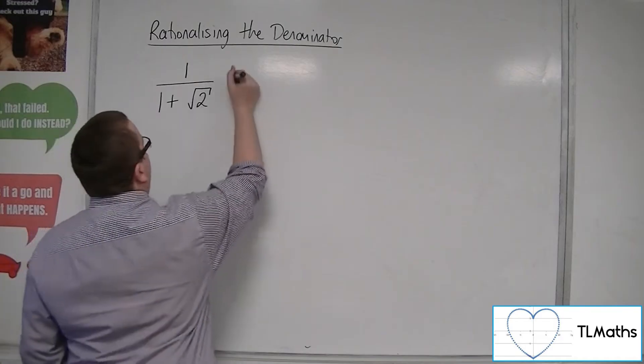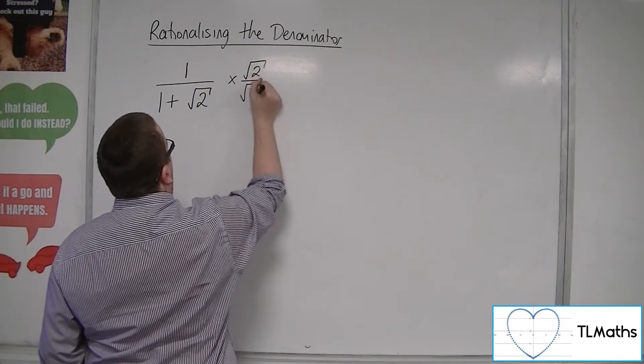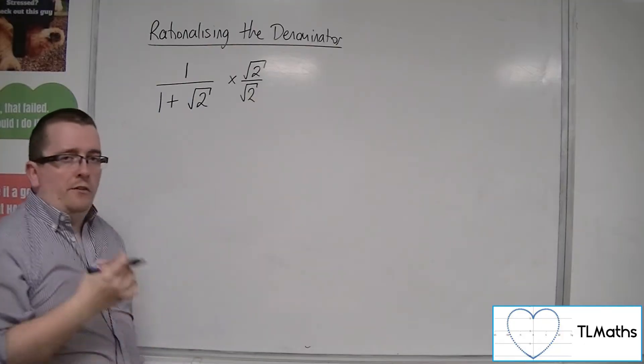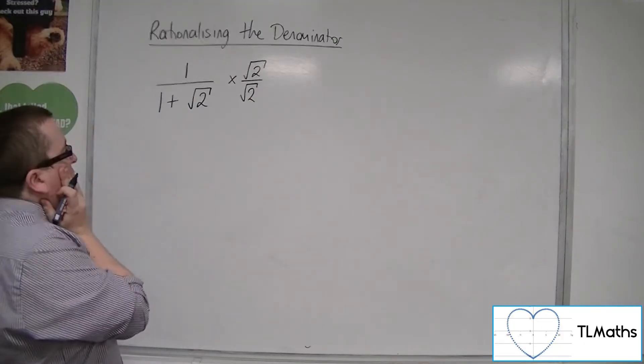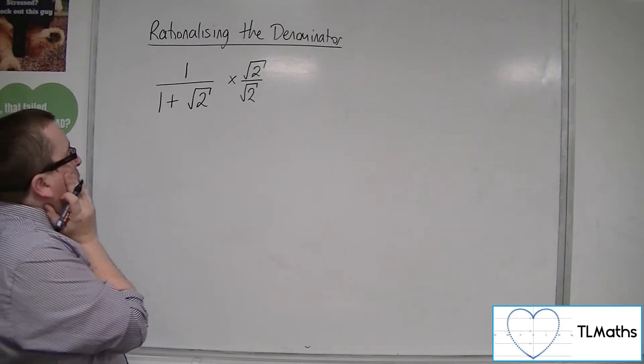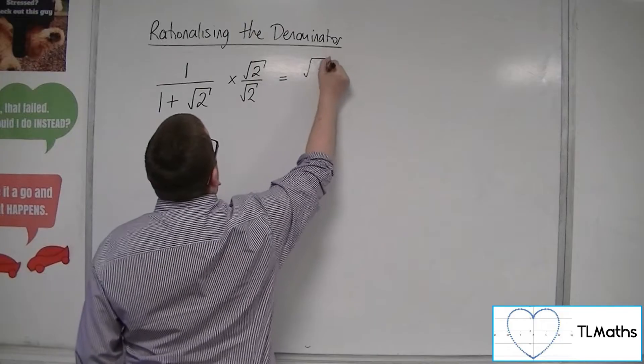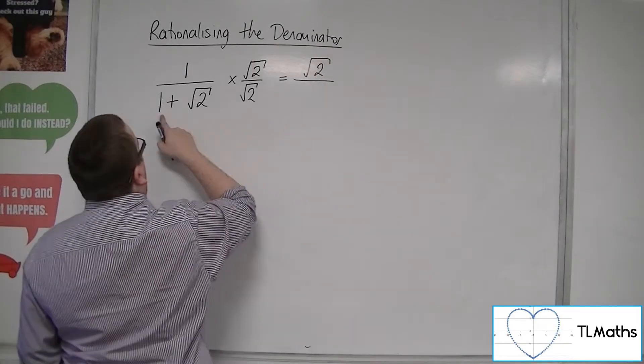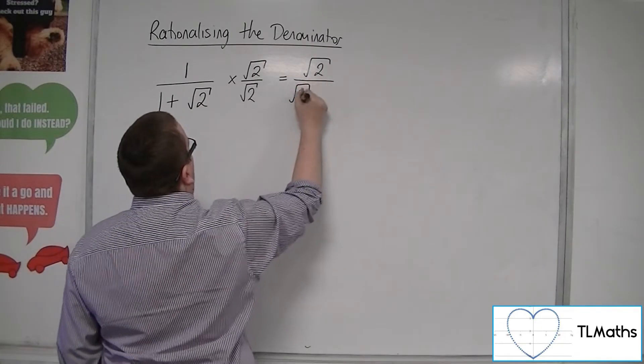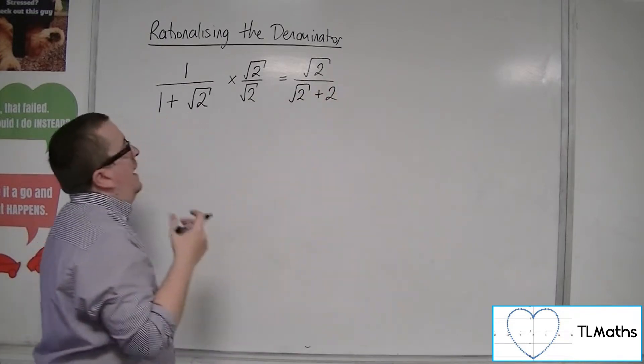One way is to multiply this by root 2 over root 2. That might be our first idea. The problem with that is that you end up with root 2 in the numerator and 1 times root 2 and root 2 times root 2, so 2.